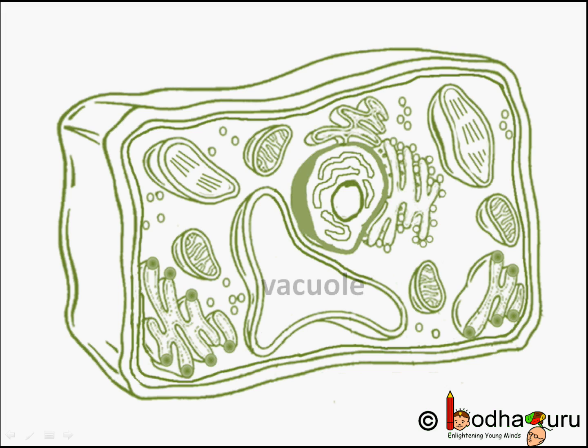Plants have sac-like parts to dispose of waste, and those are vacuoles. Vacuoles are not actually empty — they are storage sacs for solid and liquid contents.